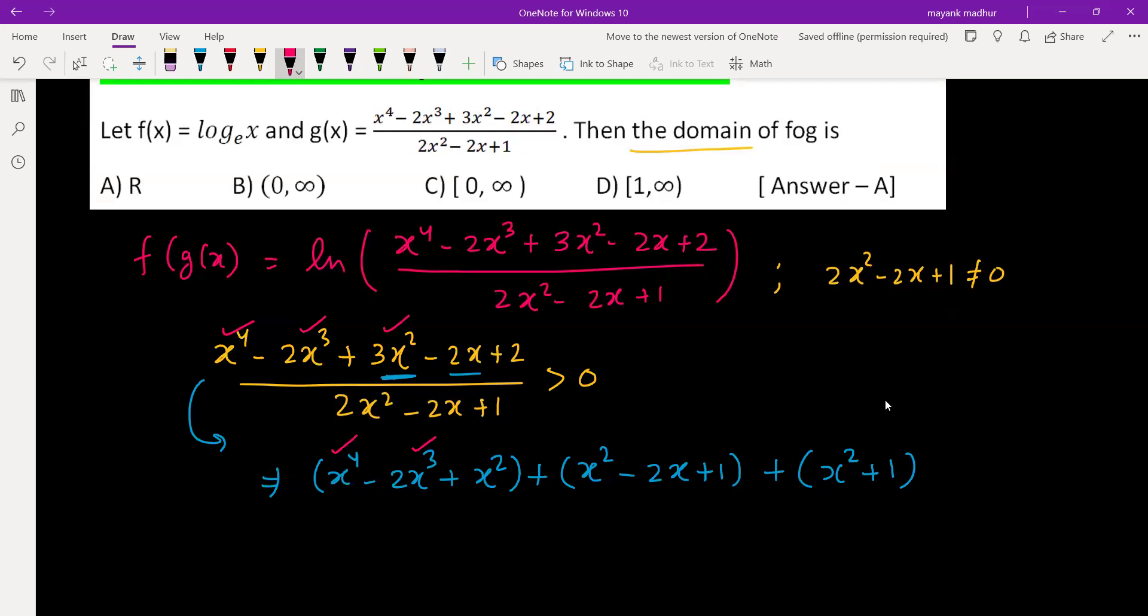x⁴, yes it is utilized. Minus 2x³ utilized. 3x²: one here, one here, one here, utilized. Minus 2x is here and 2 is 1 and 1. So this is your numerator. Denominator is you can take 2 common, and then you're left with x² - x + 1/2.